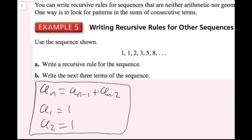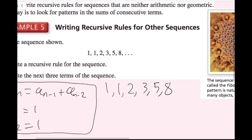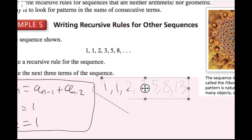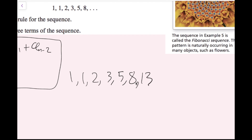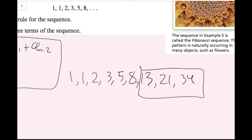For part b, I just have to write the next three terms of the Fibonacci sequence. Starting from 1, 1, 2, 3, 5, 8 — I just add the previous two terms each time. So 5 plus 8 gives 13, then 8 plus 13 gives 21, then 13 plus 21 gives 34. So the next three terms in the Fibonacci sequence are 13, 21, and 34.